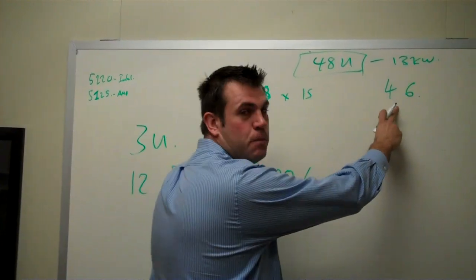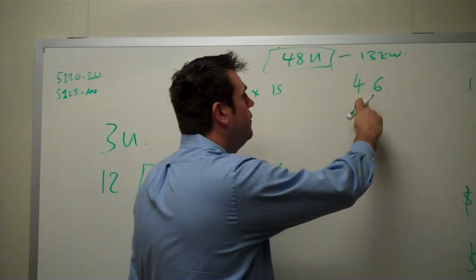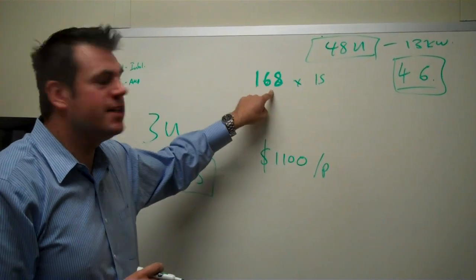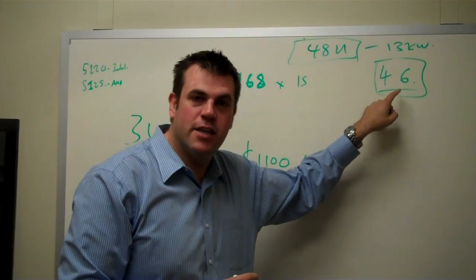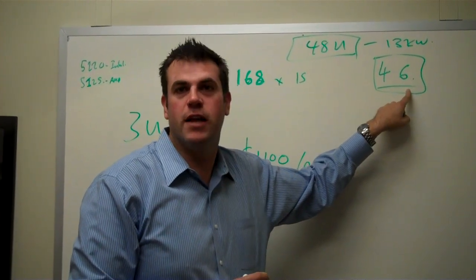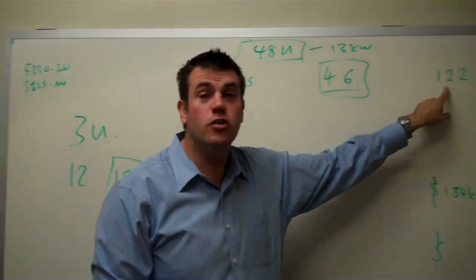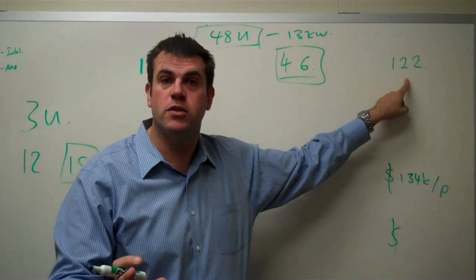And if they were using HP one-socket normal servers, they could only get 46 in there. So we can get 168 servers in the rack, versus HP with their one-socket one-U server getting 46. That's a difference of 122 servers per rack. Why is that important?